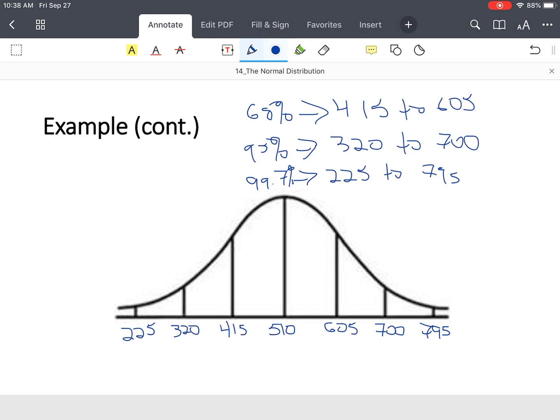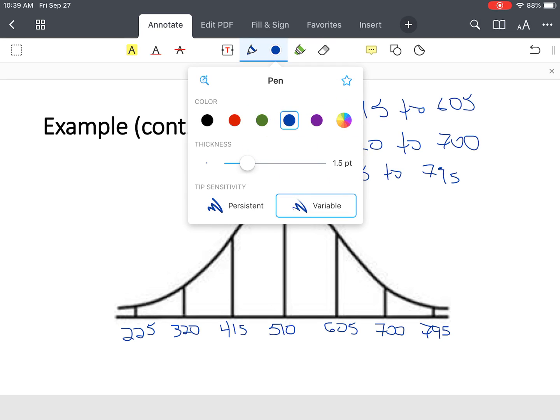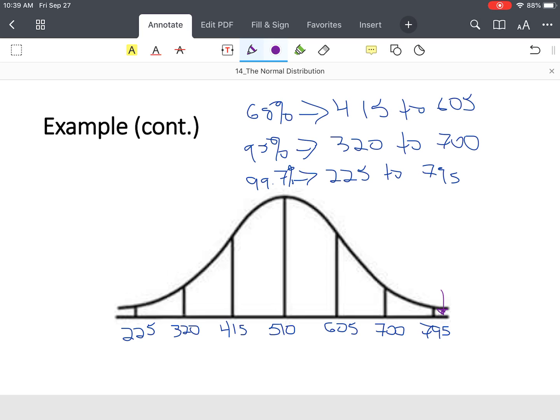You're not always going to get these clean endpoints. Let's say a score of 800. Let's say you score 800, that's rare. And if you score 200, that's rare because 99.7% of the data was between 225 and 795. So getting an extremely low score outside the three standard deviations is rare. And getting a score above 795 or outside of, above three standard deviations is rare as well. Just take note with respect to that.